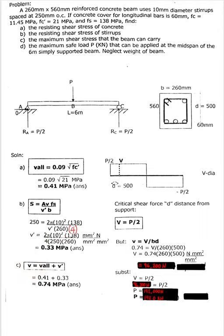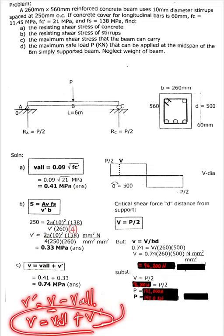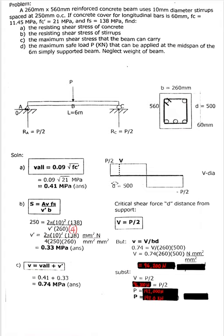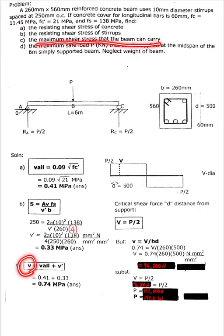For letter C, find the maximum shear stress the beam can carry. The total applied shear stress v equals v allowable plus v prime. So v equals 0.41 plus 0.33, which gives a maximum shear stress of 0.74 MPa.